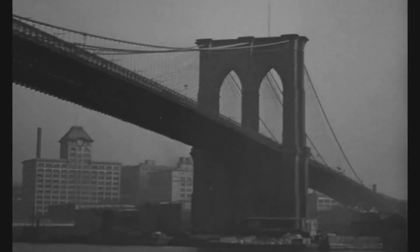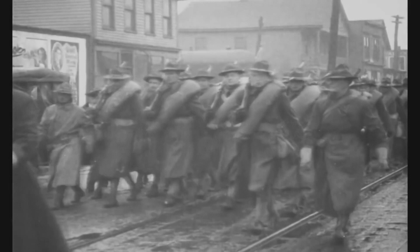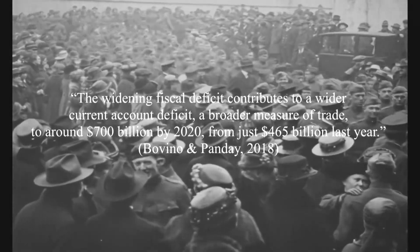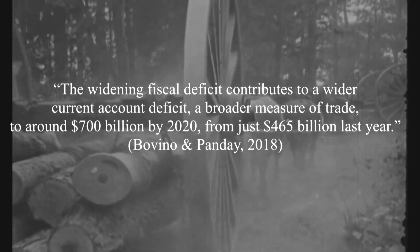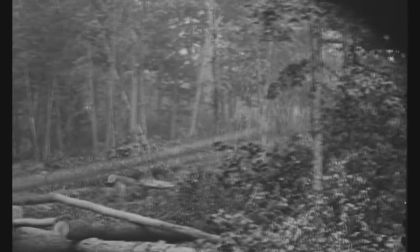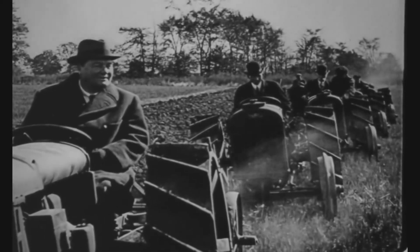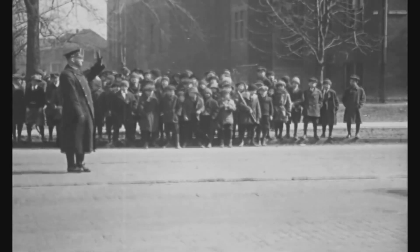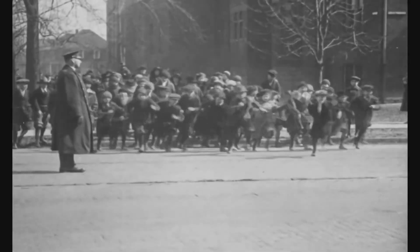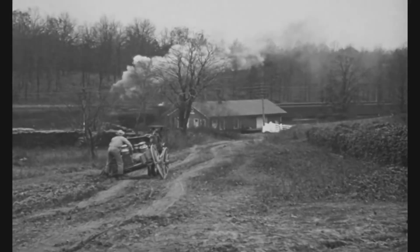To bring this theory back to the original topic: the US has been running a budget deficit, thus generating an increased current account deficit. The widening fiscal deficit contributes to a wider current account deficit — a broader measure of trade — reaching around $700 billion by 2020, up from just $465 billion the prior year. Despite Trump repeatedly stating that he wanted to implement protectionist policies to reduce the deficit with China, the continual expansion of US budget deficits simply increases reliance on foreign investment, necessitating an increase in the current account deficit. Estimates show that household savings are unlikely to increase or private investment to decrease, indicating the current account deficit is likely to only get worse.